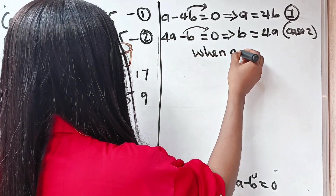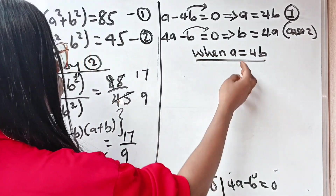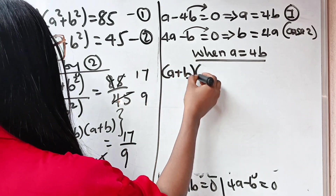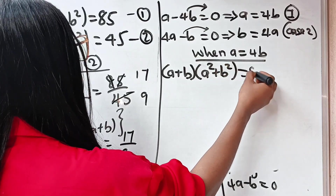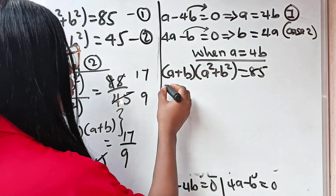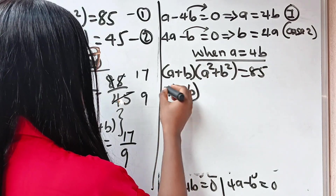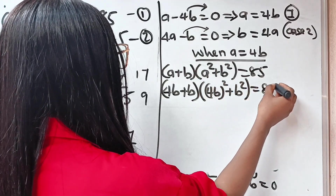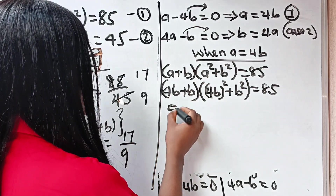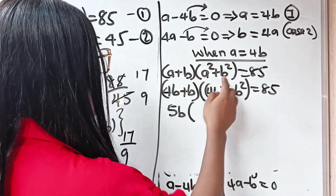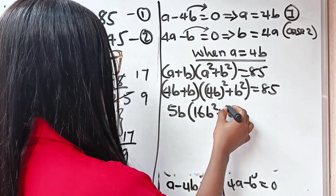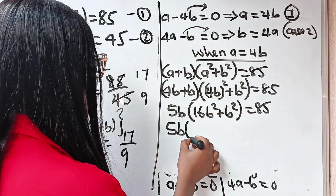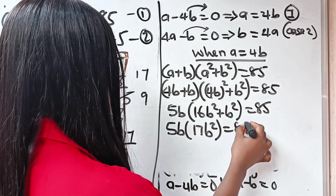When a is equal to 4b, let us substitute a equals 4b into equation one. According to equation one we have a plus b multiplied by a squared plus b squared equals 85. So substituting, we get 4b plus b bracket 4b squared plus b squared equals 85. That is 5b bracket 16b squared plus b squared equals 85, which gives 5b bracket 17b squared equals 85.